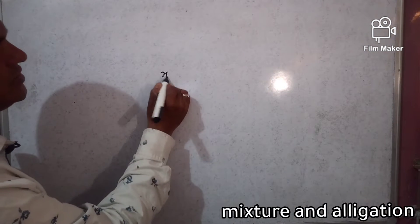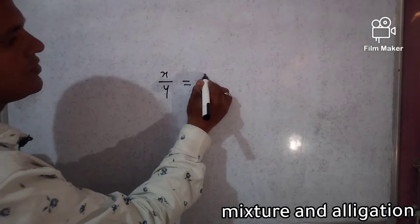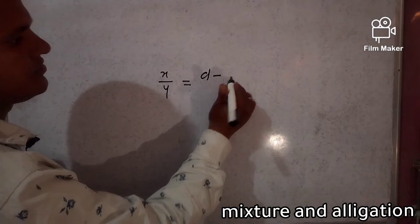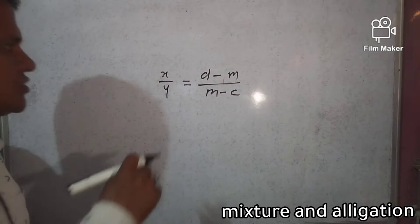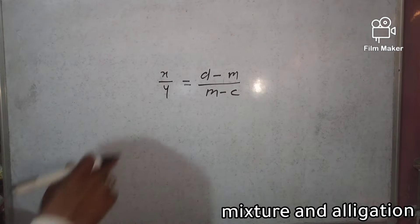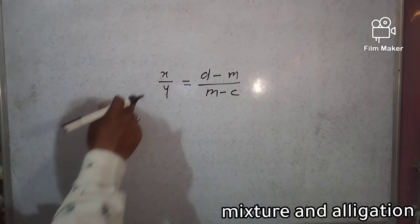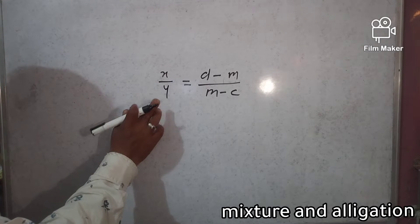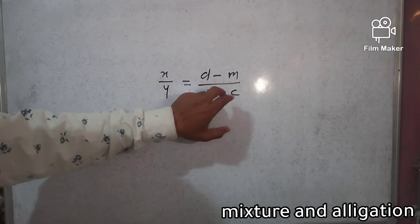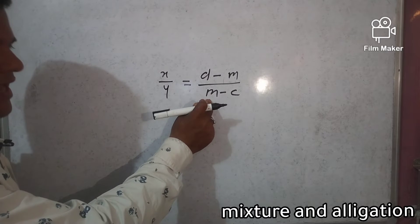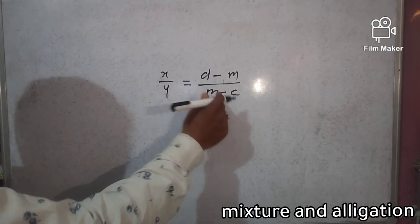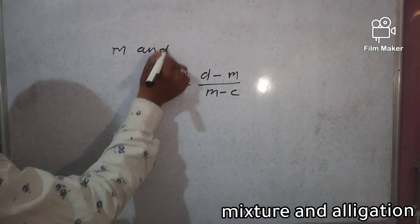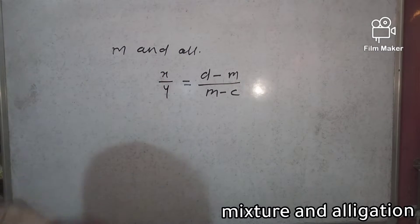The rule of mixture and allegation is: x by y is equal to (d minus m) by (m minus c). Here, x is the quantity of the cheaper ingredient and y is the quantity of the dearer ingredient. D is the dearer value, m is the mean value, and c is the cheaper value. For better understanding, let's solve a question.